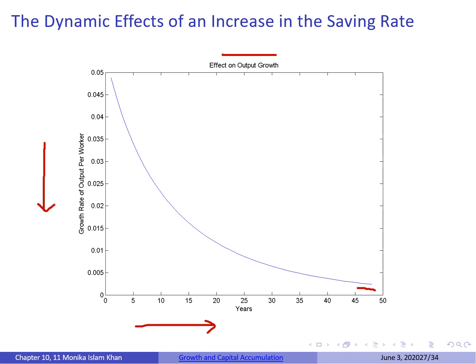However, looking at the dynamic effects on output growth: as time increases, the growth rate of output per worker is actually falling and approaching zero. This is because the savings rate only impacts output growth in the short run. As we approach the longer run, the effect of the savings rate on output growth diminishes and eventually becomes zero.